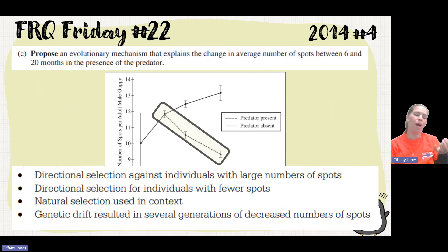Due to the fact that individuals with more spots were more likely to be captured by their predator because they're more visible, having less spots was more favorable because they were more likely to survive and more likely to pass on those traits. And then also genetic drift resulting in several generations of decreased number of spots. So due to the fact that we isolated this individual population, we were having a founder effect or some type of genetic drift that then decreased that number of spots.